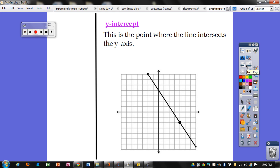y-intercept is the point where the line intersects the y-axis. So it's where this line crosses the y-axis, and it's at this point right here for this graph. This is the point 0, 4, and your b is just the y-coordinate right here. So your b is equal to 4.